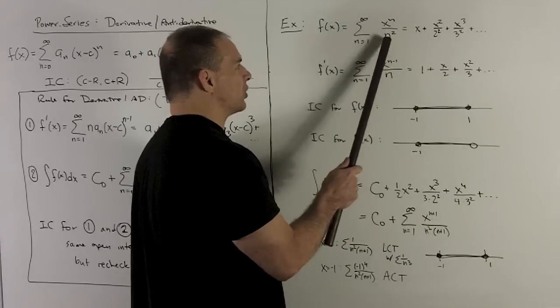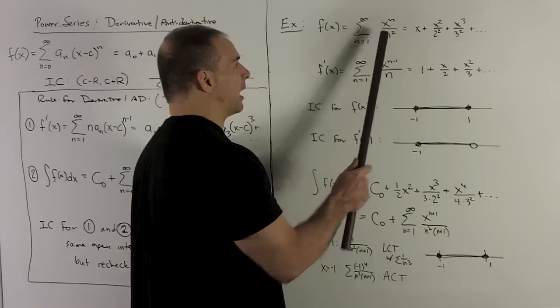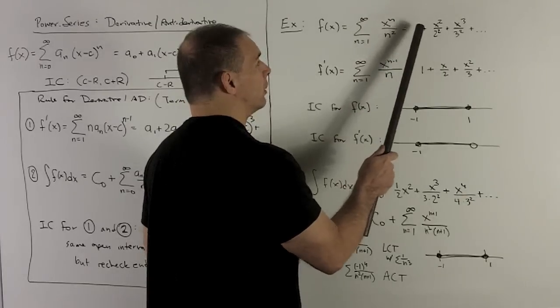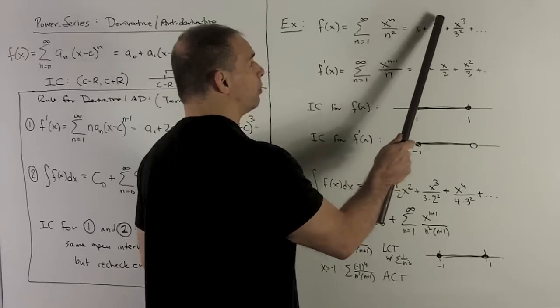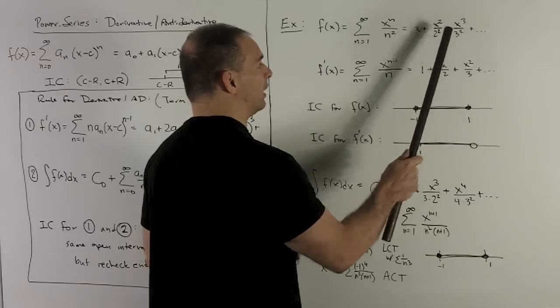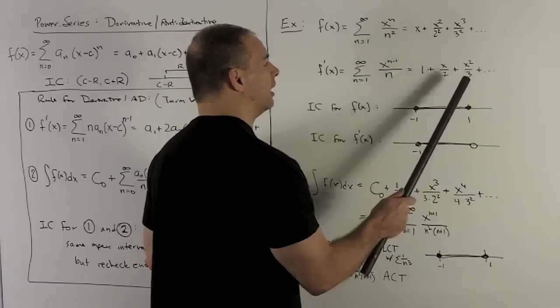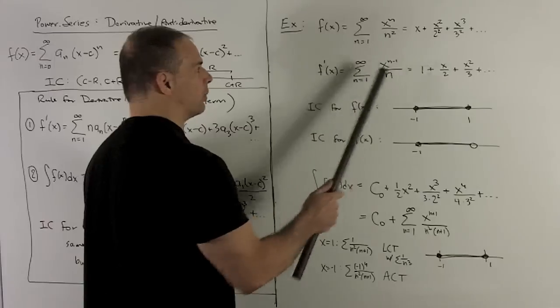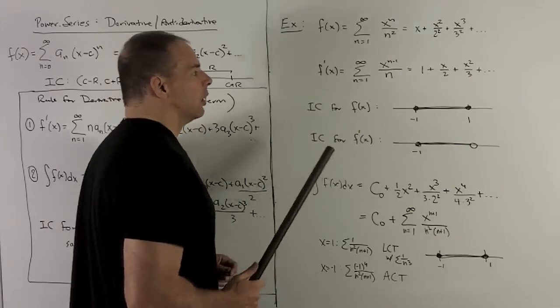All we're going to do here is bring the n down, subtract one off of it. But note, when I bring the n down, it's going to cancel with one of the n's in the bottom. So what's going to happen is that's going to turn to a one, bring the two down, give me an x over two, bring the three down, gives me x squared over three, and so on. And these two are going to match up if you track out what's happening.